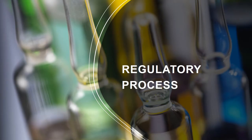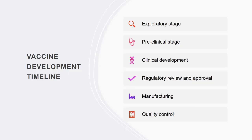Regulatory processes in vaccine design and development are an important component of vaccine design. As a biotechnologist, you must be aware of the timeline for vaccine development, which includes the exploratory stage, the pre-clinical stage, clinical development, regulatory review and approval, and manufacturing and quality control.